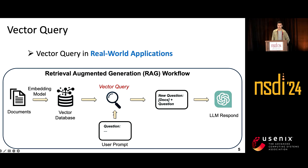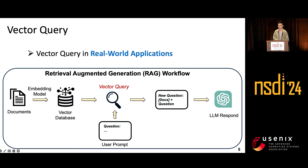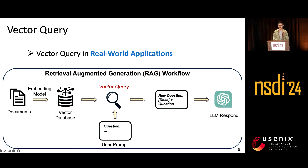Vector query is adopted in many real-world AI applications like information retrieval, face recognition, recommendation, and enhancing language models. In particular, recent advancements of LLMs have catalyzed the emergence of AI applications such as ChatGPT. However, LLMs only support short-term memory, like 32K tokens for GPT-4. Vector databases are applied as persistent long-term memory for LLMs, which is called retrieval augmented generation.